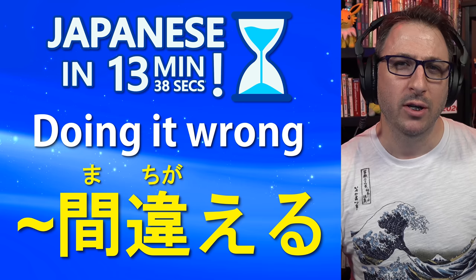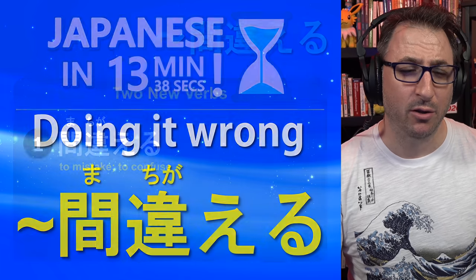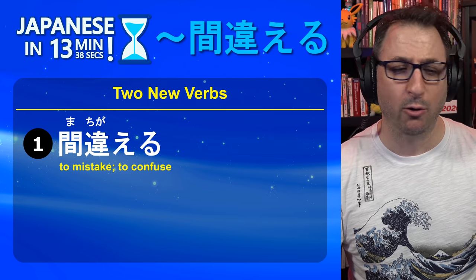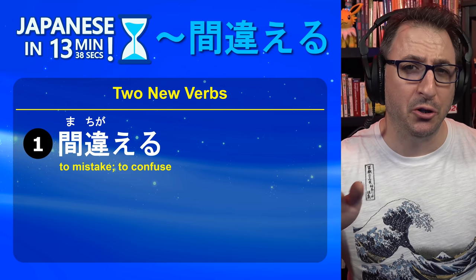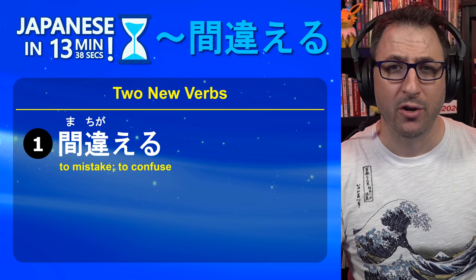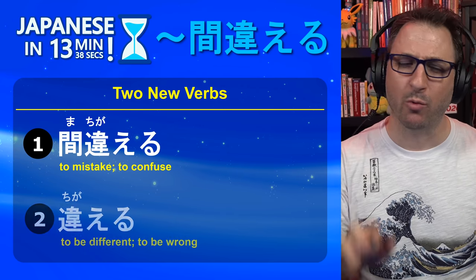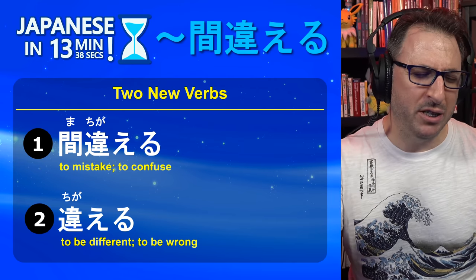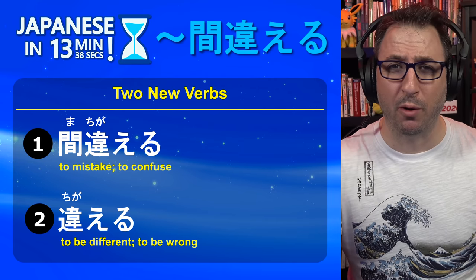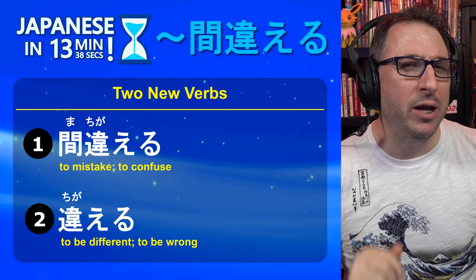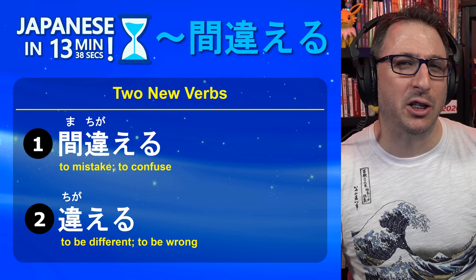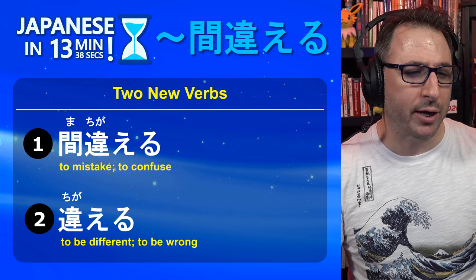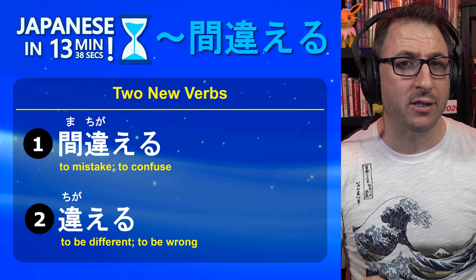There are two types of マチガエル. There's マチガエル, which means to mistake or to confuse. But there's also 違える, without the マ, and it means to be different or to be wrong. But they will mostly mean the same thing.